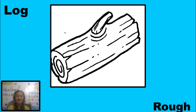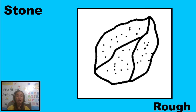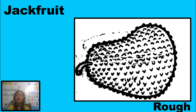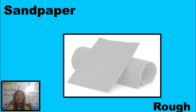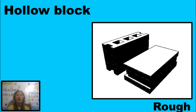Log is rough. Stone is rough. Jackfruit is rough. Pineapple is rough. Sandpaper is rough. So, these are examples of rough objects.